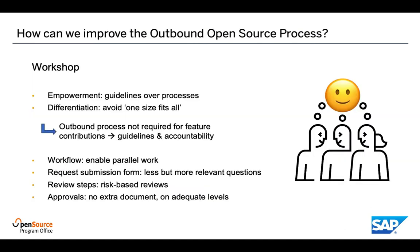That is why we organized an OSPO workshop with all relevant stakeholders to completely redesign the process. We invited representatives from all teams involved in the process, as well as from our open source development projects. We carefully revisited every step and every document of the process to understand the original reasoning and to evaluate if there might be more lightweight alternatives. For this analysis, we had defined a set of criteria, the most important of which was empowerment — meaning that we wanted to prefer guidelines over processes whenever possible, in order not to micromanage and police our developers, but to empower them by providing according guidelines and holding them accountable for adhering to these guidelines.